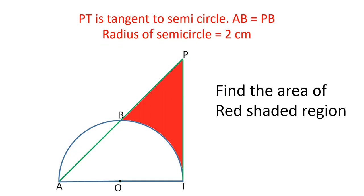In this video, there is a semicircle here and there is a tangent to the semicircle which is PT. AP is joined. It is such that AB equals PB. The radius of the semicircle is 2 cm. You have to find the area of this red shaded region.